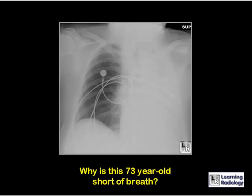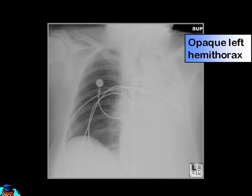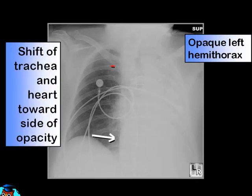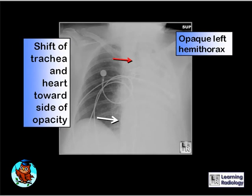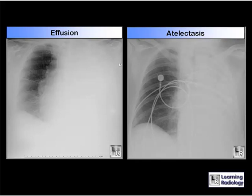Why is this 73-year-old short of breath? Again there is an opacified left hemithorax, but here the trachea and heart shift toward the side of opacification, indicating volume loss — characteristic of atelectasis of the entire left lung. This patient also had an obstructing bronchogenic carcinoma. Note the differences: effusion shifts structures away, atelectasis shifts toward. With underlying malignancy there may be a balance between pleural fluid and atelectasis, so even with an opacified hemithorax there may be no shift of mediastinal structures.